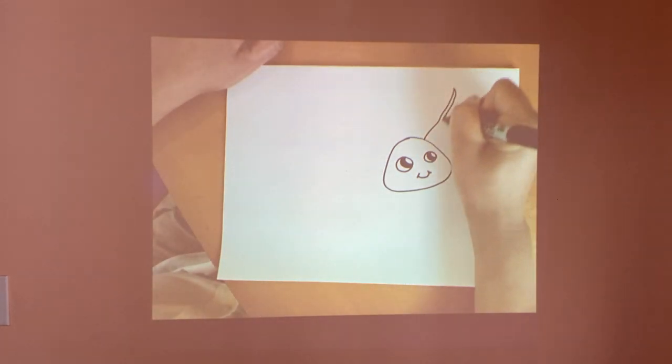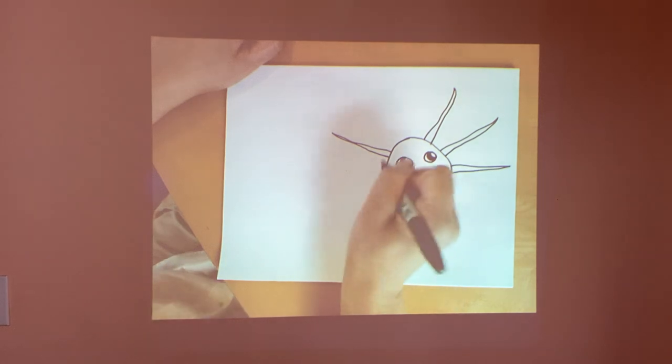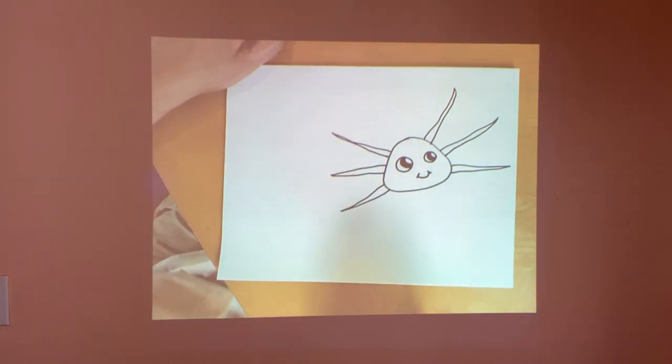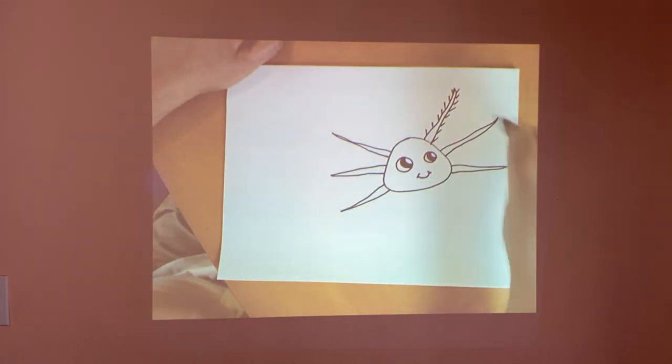So draw sort of like a wavy, if you want, or not so perfect, sort of like long spikes, like this. Now let's add some lines. I have 15 kind of spiky lines total. That's my favorite number.